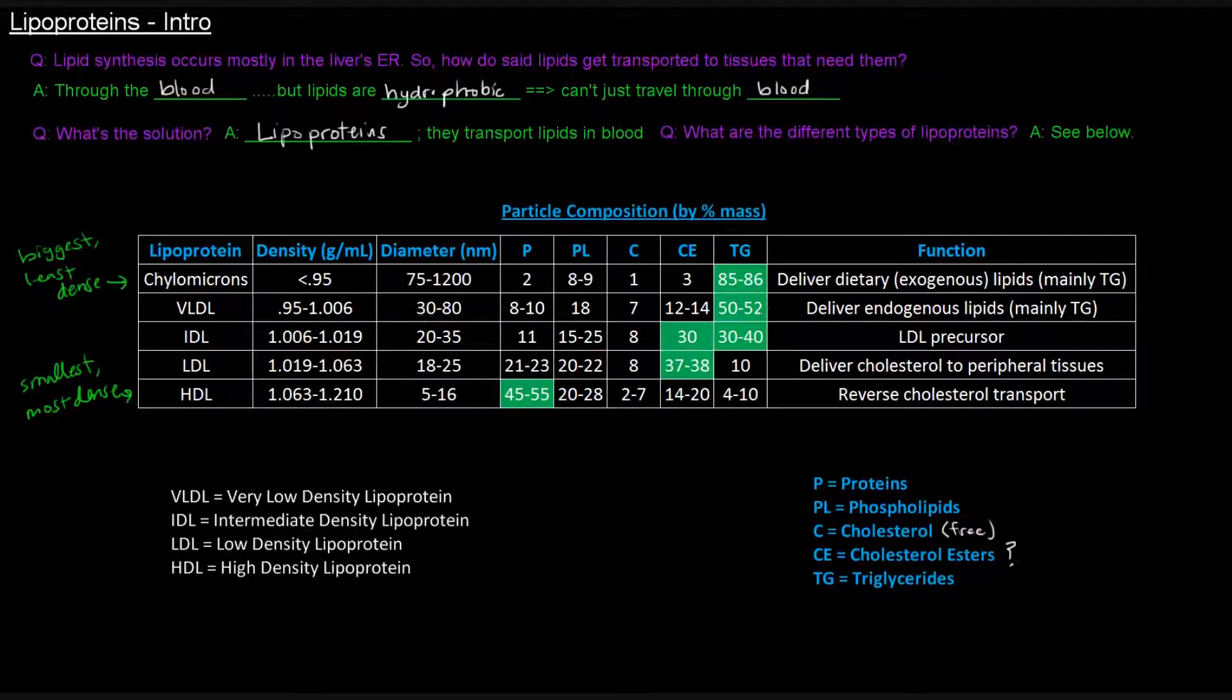VLDL do a similar thing. They've also got lots of triglycerides. They deliver endogenous lipids, which are basically lipids that our body synthesizes ourselves. Again, both of these are mostly triglycerides. It makes sense that they're primarily transporting triglycerides.